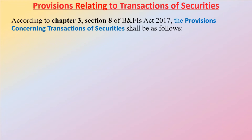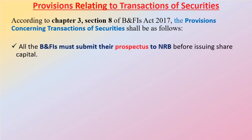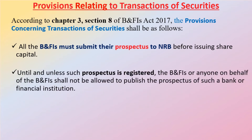Provisions relating to transaction of securities — according to Chapter 3, Section 8 of the Bank and Financial Institution Act 2017, the provisions concerning the prospectus shall be as follows: all banks and financial institutions must submit their prospectus to Nepal Rastra Bank before issuing share capital. Until such prospectus is registered, the bank or financial institution, or anyone on its behalf, shall not be allowed to publish the prospectus.